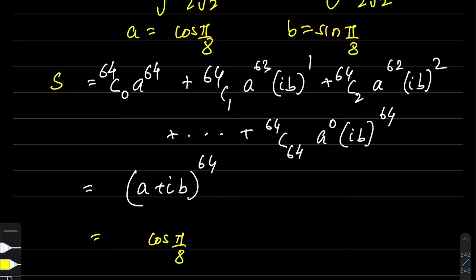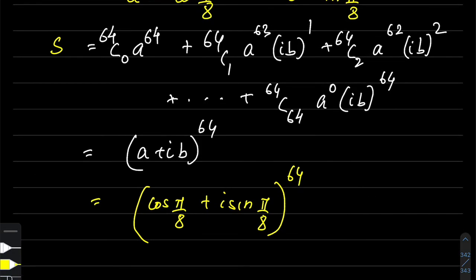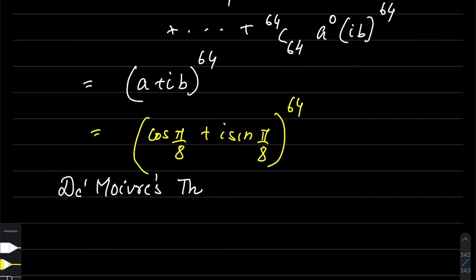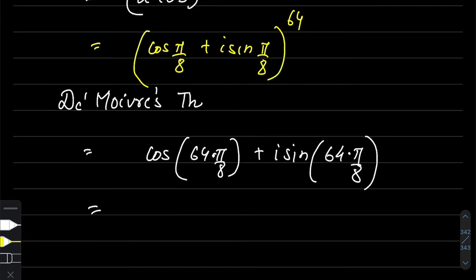Now we substitute a = cos(π/8) and b = sin(π/8), giving us [cos(π/8) + i·sin(π/8)]^64. When you see such a term, the famous De Moivre's theorem comes to mind. By De Moivre's theorem, we multiply the power of 64 with these arguments. We get cos(64π/8) + i·sin(64π/8), which simplifies to cos(8π) + i·sin(8π).